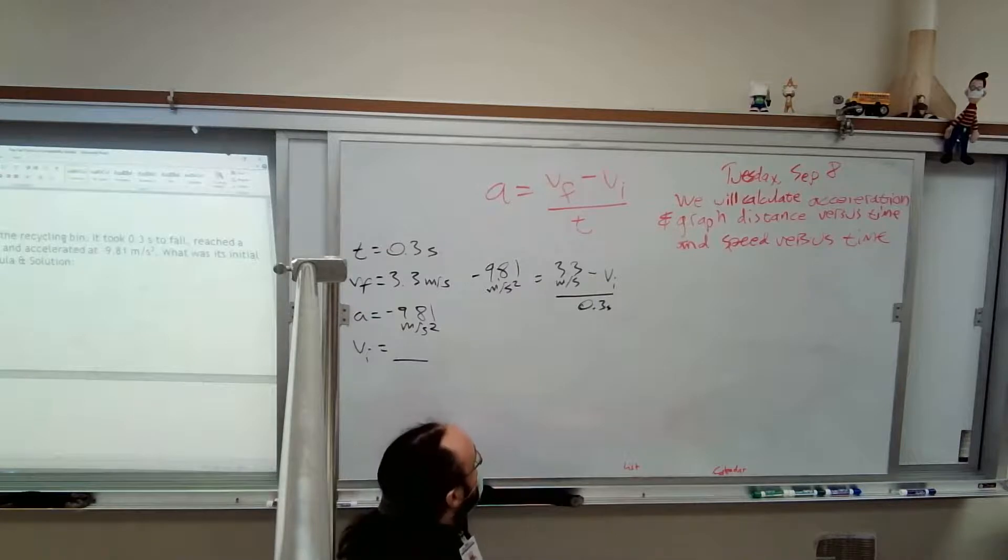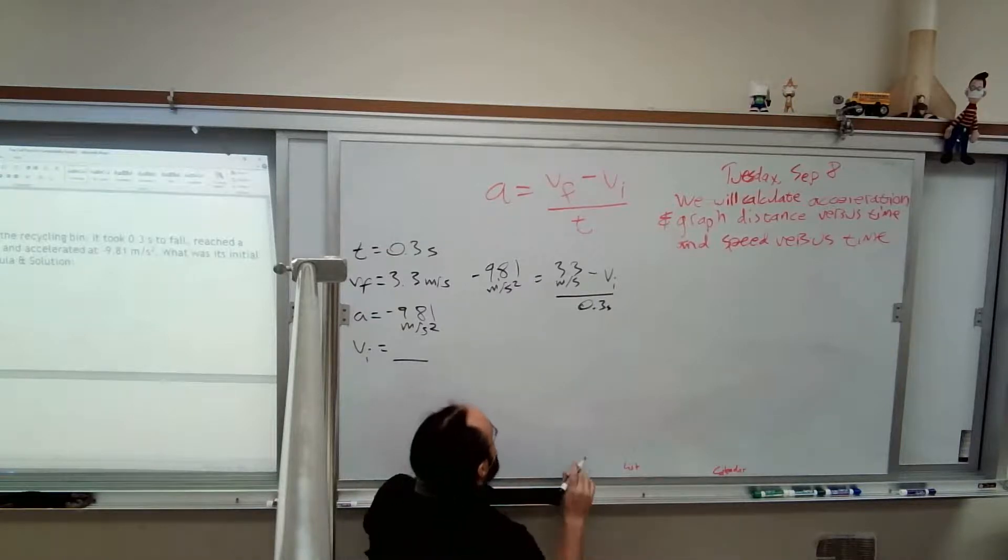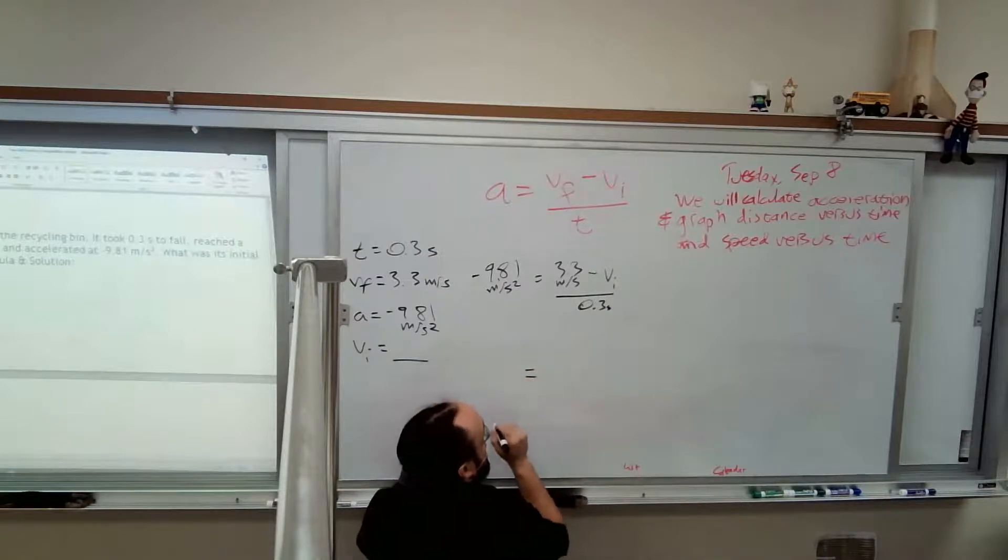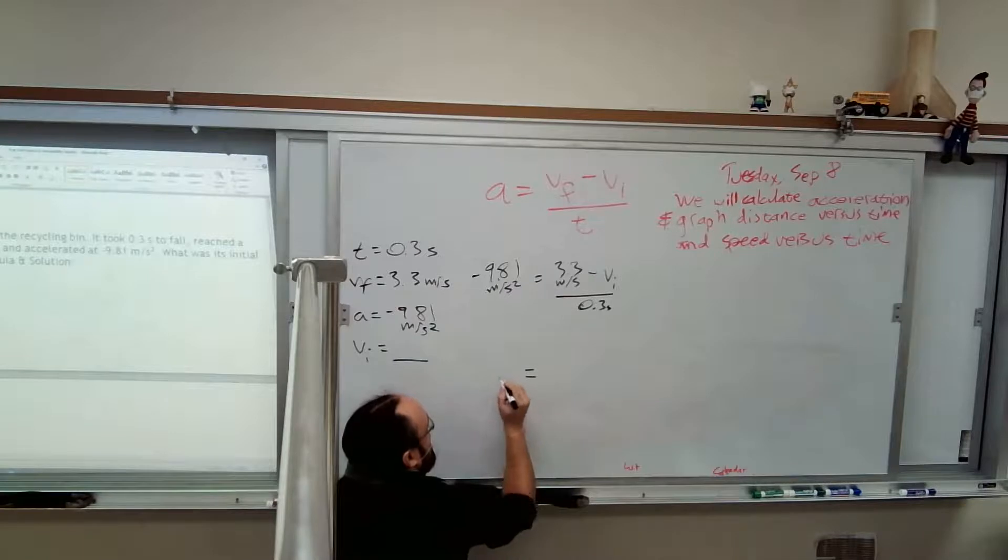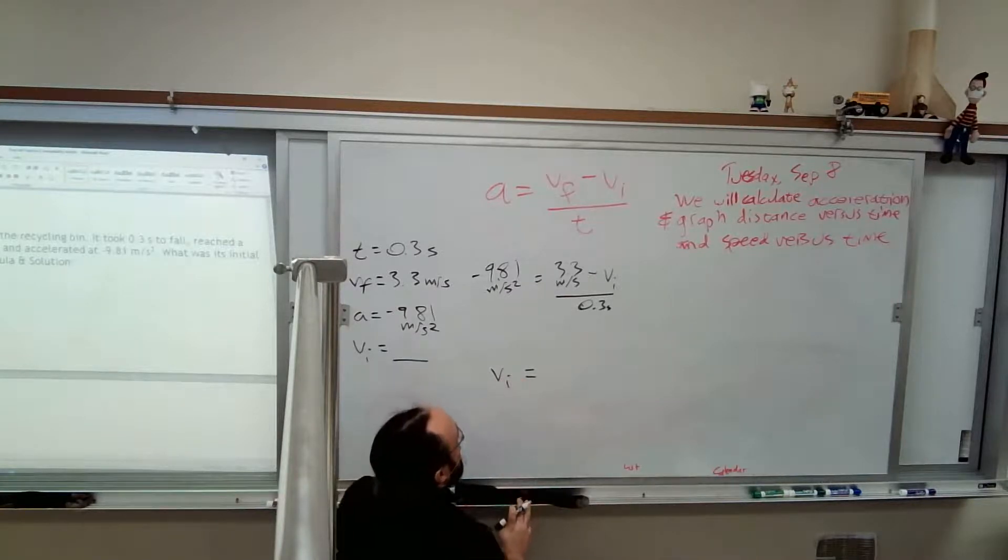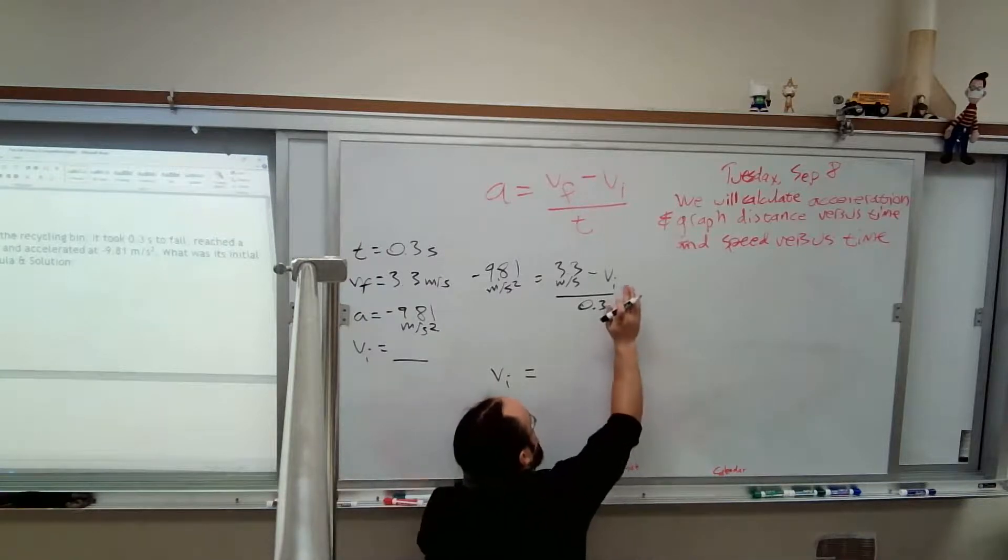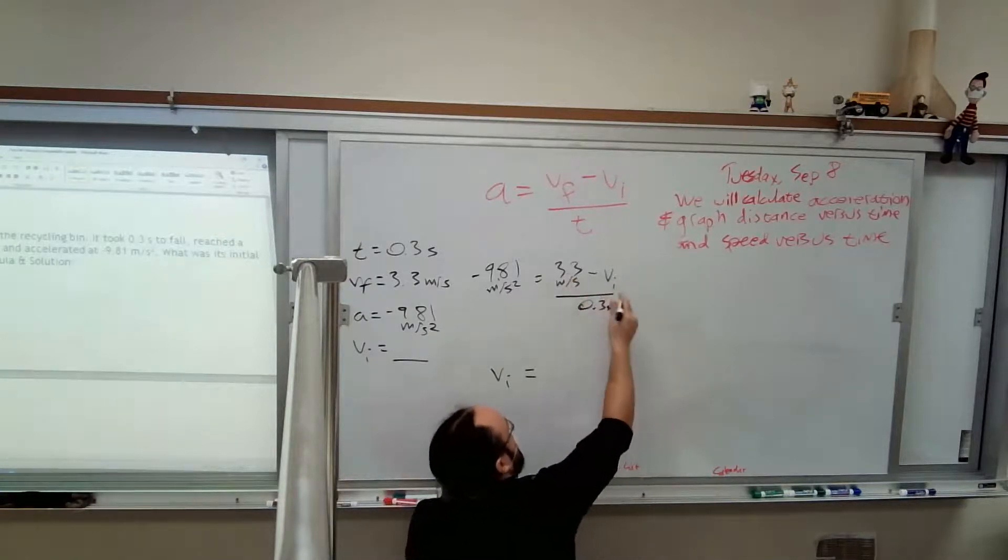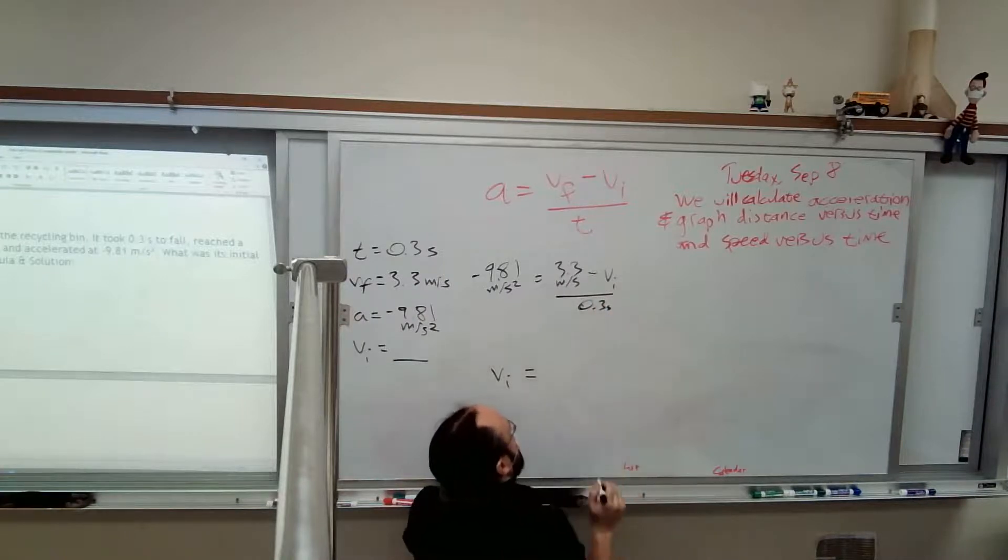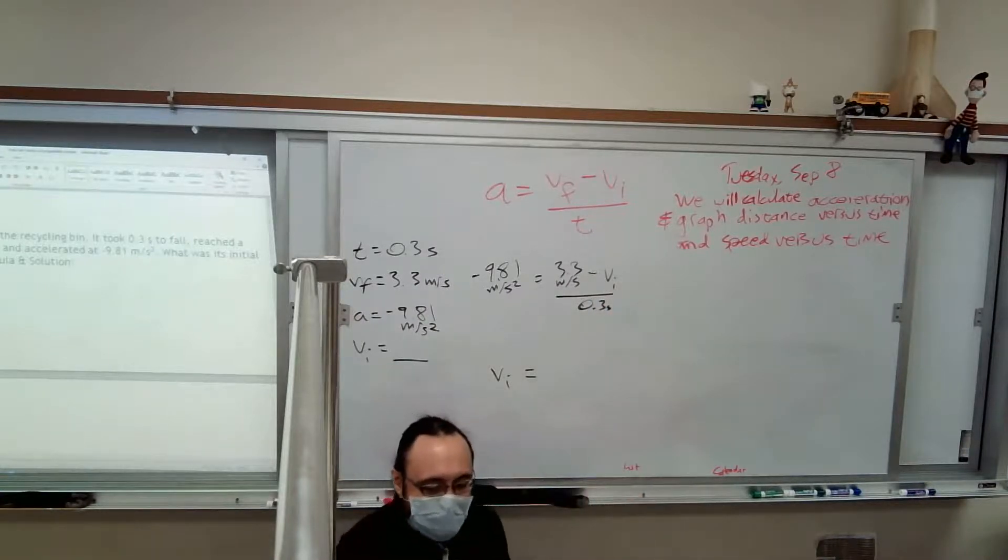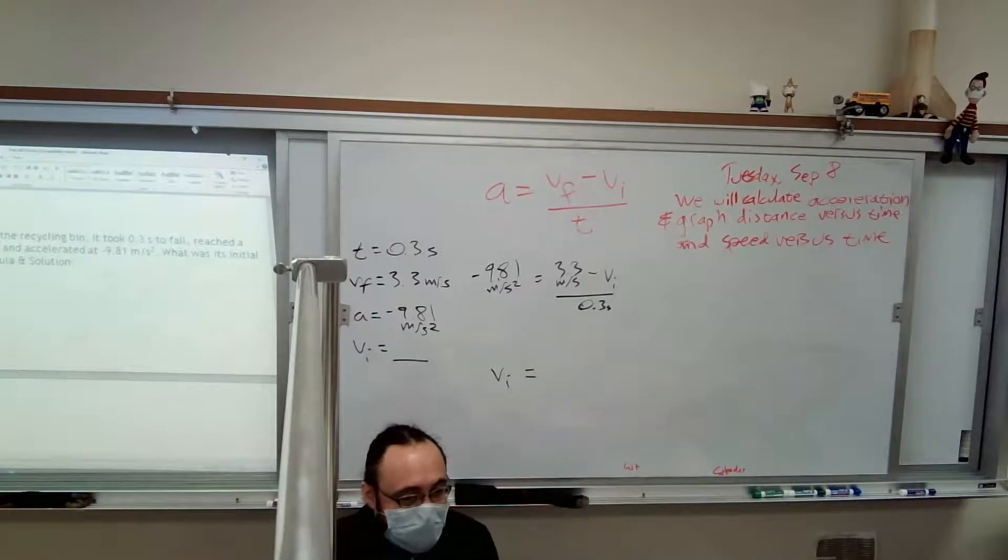We've got to get Vi by itself. We wanted to say equals Vi, but I'm going to say Vi equals over here, because I think that's what we're going to get at the end. So we need to start getting these numbers away from Vi. We've got a 3.3 that we need to cancel. We've got a 0.3 that we need to cancel. Whenever something's in the denominator, you want to get it out of there first.